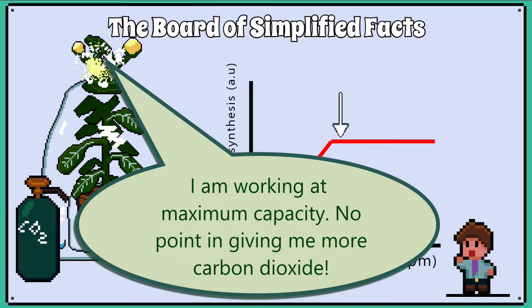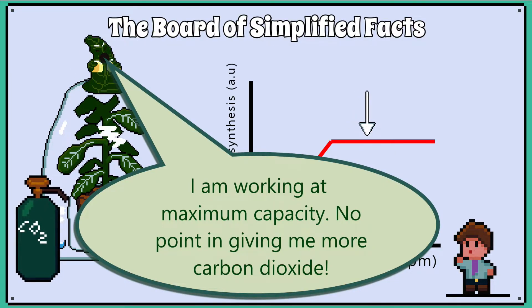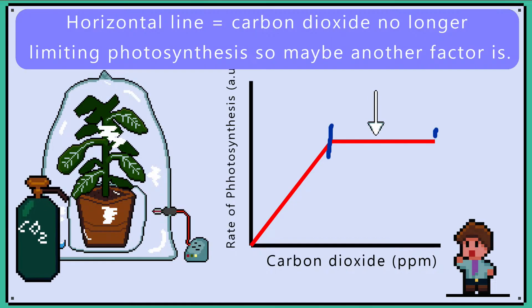When the line levels off, this means the plant has reached its capacity to use carbon dioxide. No matter how much more carbon dioxide we add, the rate of photosynthesis is not going up. So we could say something else might be limiting the rate of photosynthesis. Remember: a horizontal line equals carbon dioxide no longer limiting photosynthesis, so maybe another factor is.